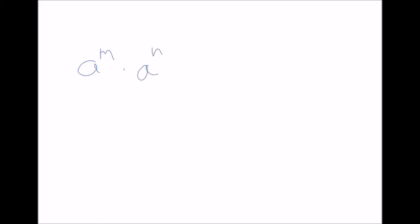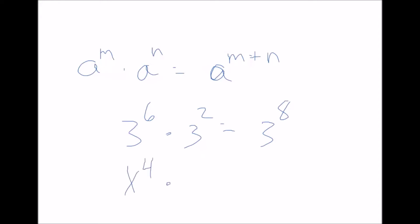So let's say you have a to the m times a to the n. What you're going to do is say a to the m plus n. In a real example, let's say you have 3 to the 6th times 3 to the 2nd. That really means 3 to the 8th, because you have 3 to the 6 plus 2, which is 3 to the 8th. Let's say you have x to the 4th times x to the 6th — your answer is x to the 4 plus 6, or x to the 10th power.